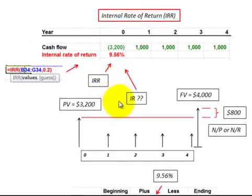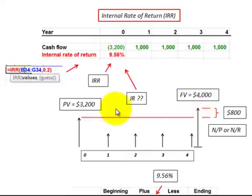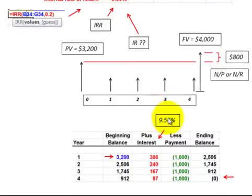Now let's look at how we can use the internal rate of return function to determine the interest rate on an annuity-type payment with notes receivable or payable. Say we've got a present value of $3,200 and we know that we have four payments of $1,000 each, amounting to $4,000 total that we're going to receive or pay on that notes receivable or payable. So we have $4,000 less $3,200, which gives us $800 that we have to account for as interest expense or revenue over the life of the notes.